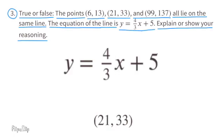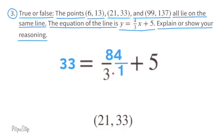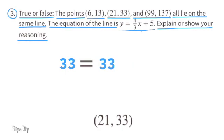For point (21, 33): substitute x with 21 and y with 33. 4 thirds times 21 equals 84 over 3, which is 28. 28 plus 5 is 33, and 33 equals 33, so this is true.